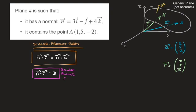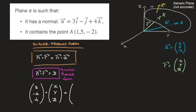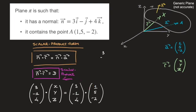For the plane pi we have here, let's replace the vector n, vector r, and vector a by the vectors we've defined. As a column vector, n is 3, negative 1, 4. So we're calculating the dot product with r, which is x, y, z. That equals the dot product of the normal vector — 3, negative 1, 4 — with vector a, whose components are 1, 5, negative 2.